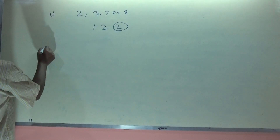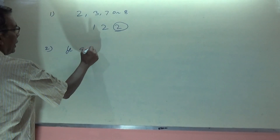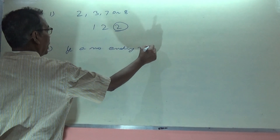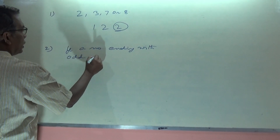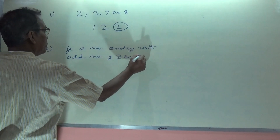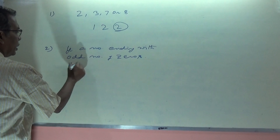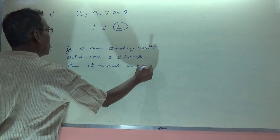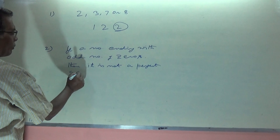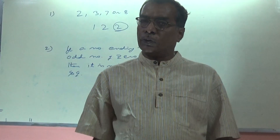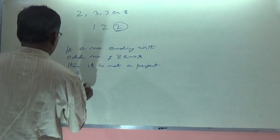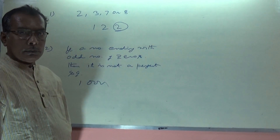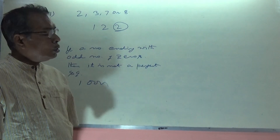Rule number two: if a number ends with an odd number of zeros, then it is not a perfect square. For example, if the number ends with 1000 — that is, three zeros — three is an odd number of zeros, so it is not a perfect square. No need to check further.